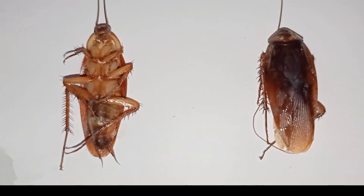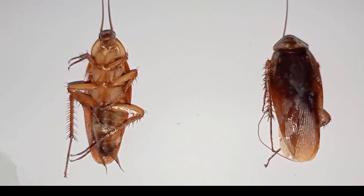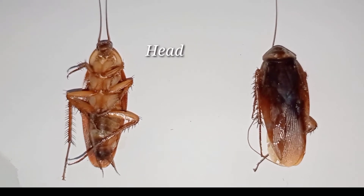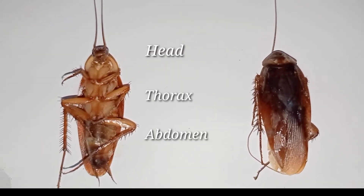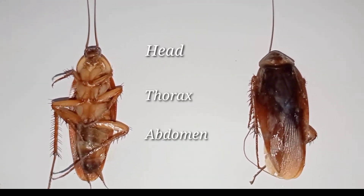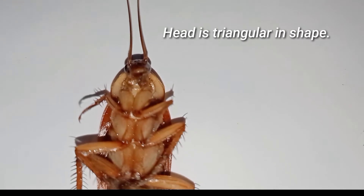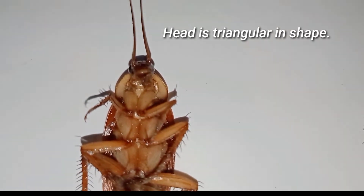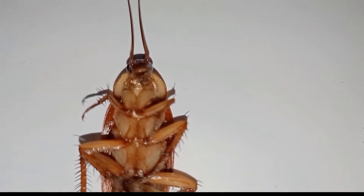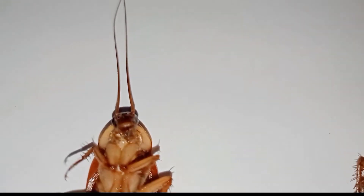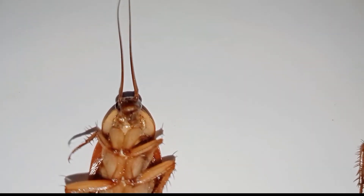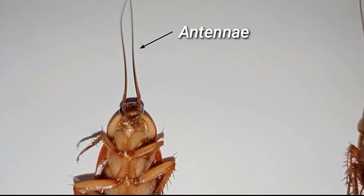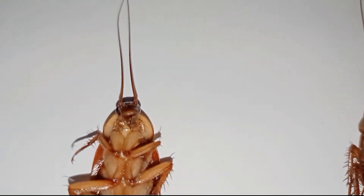The body of a cockroach is segmented and divisible into three distinct regions: the head, thorax, and abdomen. The head of the cockroach is triangular in shape and it is present anteriorly. They also have antennae that serve as sensory receptors and help them in monitoring their environment.